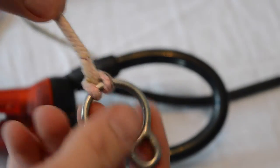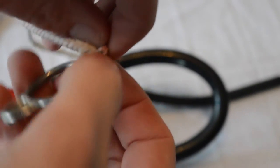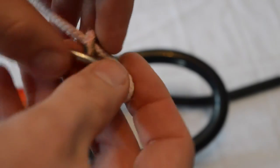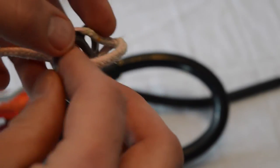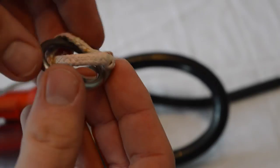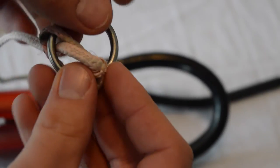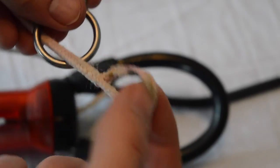The first step in removing the safety line is going to be taking the safety line off of the leash attachment ring. So you do that by feeding the loop around the attachment ring itself. Once you do that, you're able to pull the line right through the center of the ring.